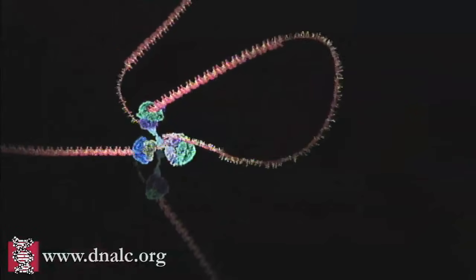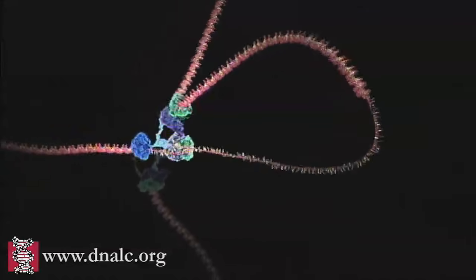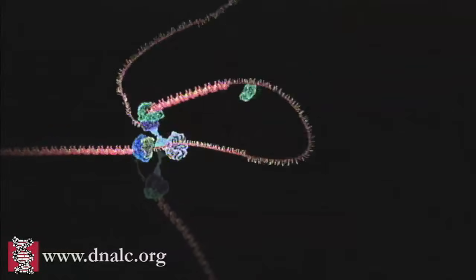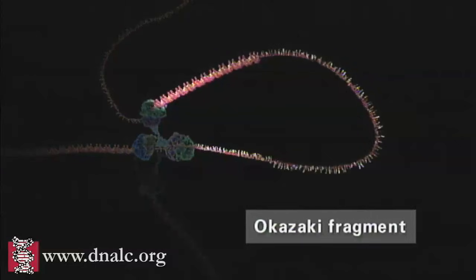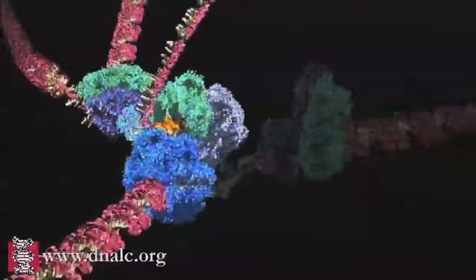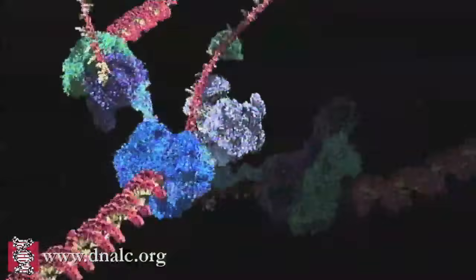As it emerges from the helix, the lagging strand is organized into sections called Okazaki fragments. These are then presented to a second DNA polymerase enzyme in the preferred 5' to 3' orientation.